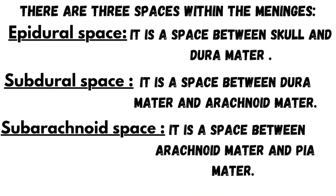There are three important spaces around the brain: the epidural space, the subdural space, and the subarachnoid space. These layers play a crucial role in protecting the brain, and between them are small spaces important for protection, cushioning and blood flow. The epidural space lies between the skull and the dura mater — it's normally a potential space, meaning it doesn't contain anything unless something forces it open, like fluid or blood.